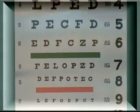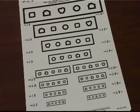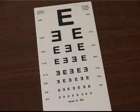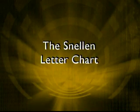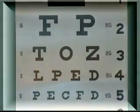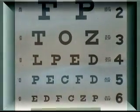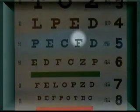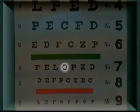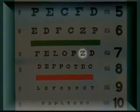For the Snellen eye test, we use a wall chart consisting of several lines of letters or symbols. There are different kinds of charts. The letter chart normally uses letters of the alphabet. Traditionally, only the letters C, D, E, F, L, O, P, T and Z are used.